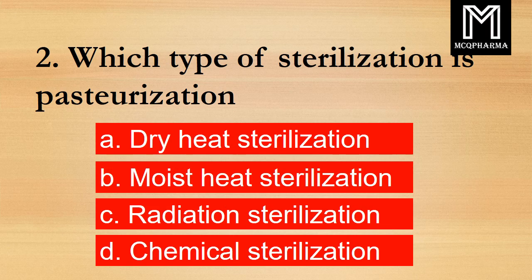Question number 2. Which type of sterilization is pasteurization? Option A: Dry heat sterilization. B: Moist heat sterilization. C: Radiation sterilization. D: Chemical sterilization. Correct answer: Option B, Moist heat sterilization.